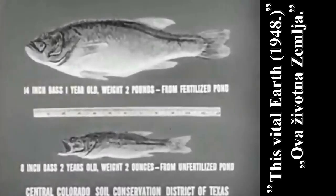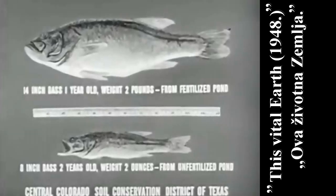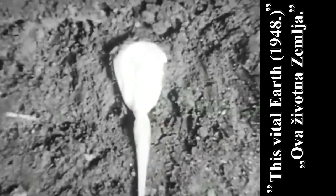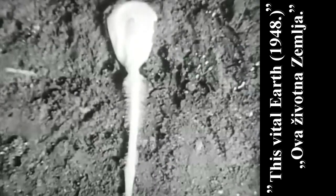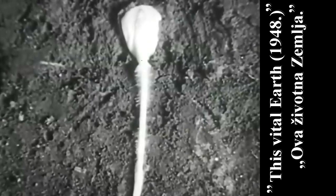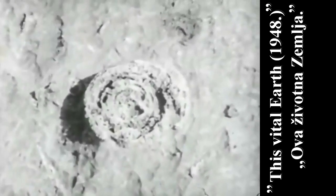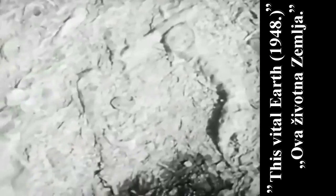The top bass here is one year old, the one beneath is two years old, yet the top bass weighs sixteen times as much. He was raised in a properly balanced, fertilized pond. The same basic principles of interdependence reach down into the soil. As this grain of corn puts forth roots, it is actually building the soil's elements into new and useful combinations. In much the same way, minerals have been made available in useful combinations by living forms of the past, and their work recorded in fossils such as these.